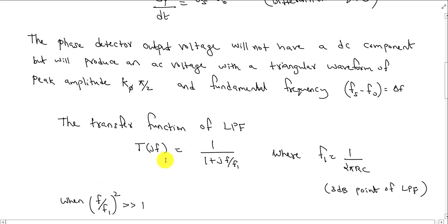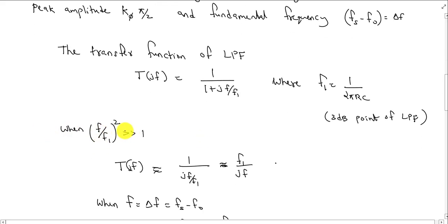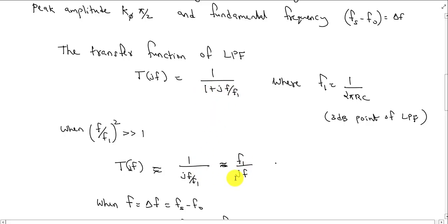The magnitude is 1 divided by the square root of 1 plus (F/F1) squared. Condition check: when (F/F1) squared is very much greater than 1, then for this expression, the value F/F1 squared is very much greater than 1. This causes T(jF) to become approximately equal to 1 divided by (F/F1) — that is, T(jF) ≈ F1/F.